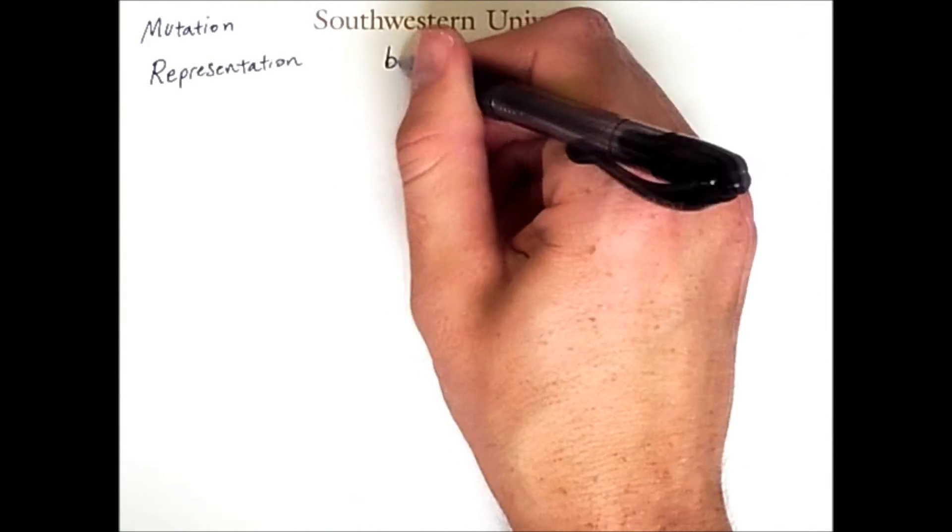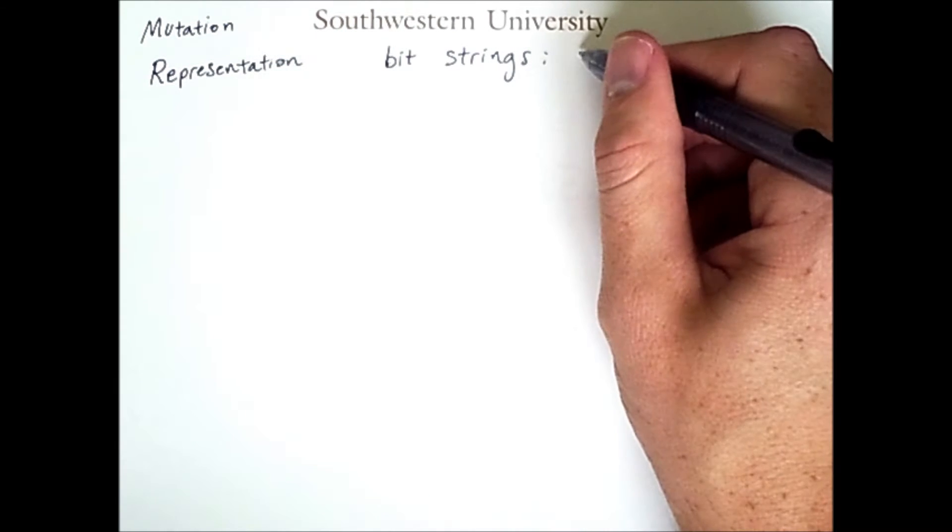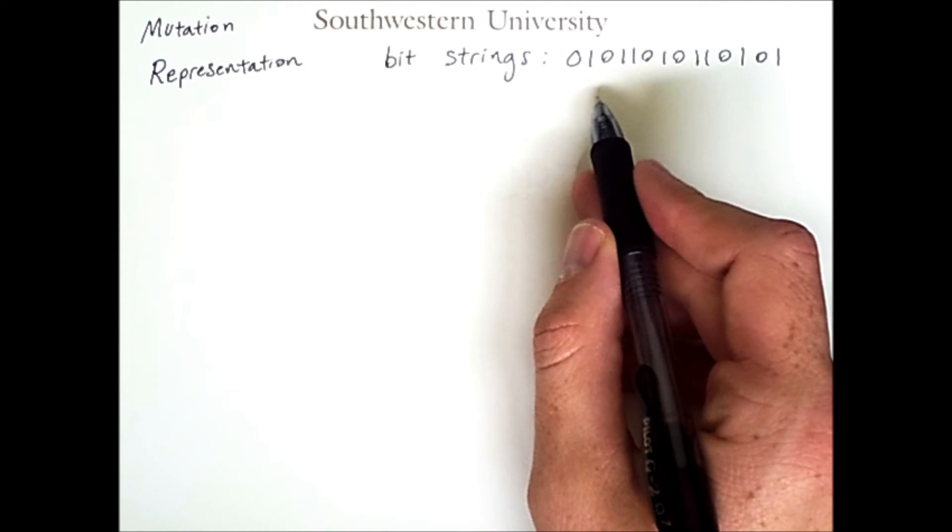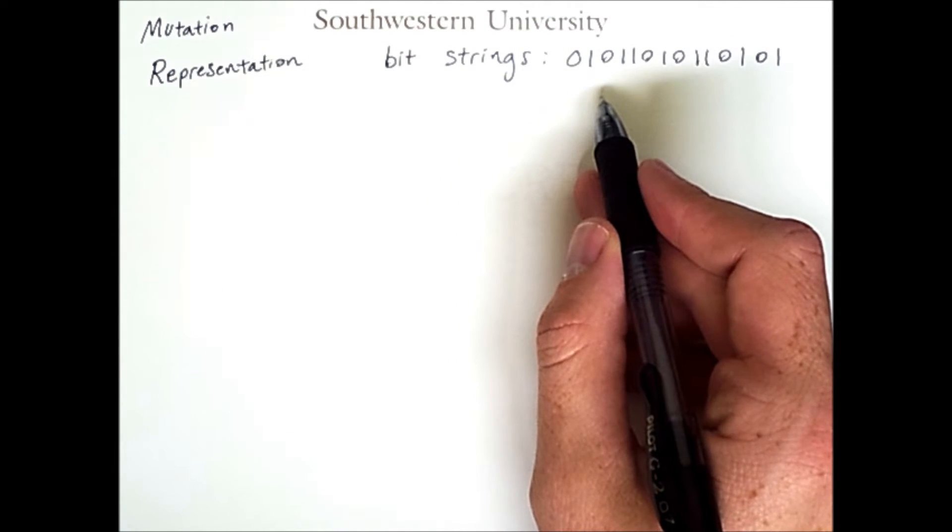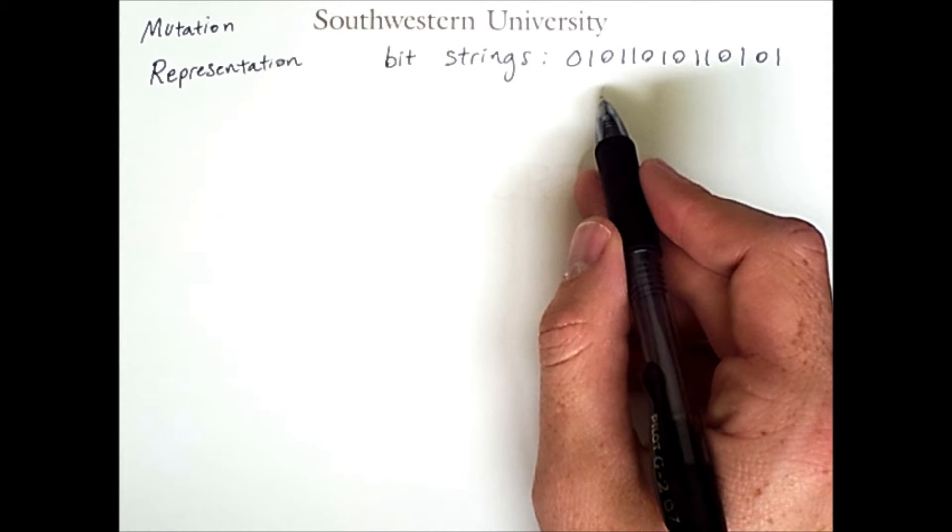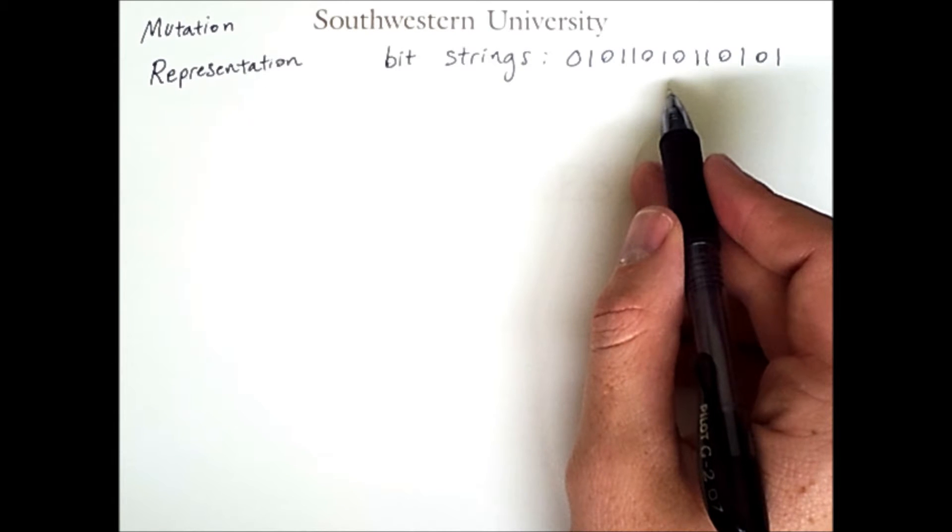For example, bitstrings. An example being the following. Bitstrings are common in evolutionary computation because all data in a computer is ultimately just zeros and ones. You can use bitstrings to represent just about anything.